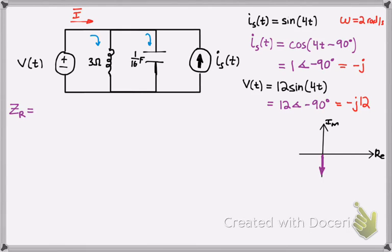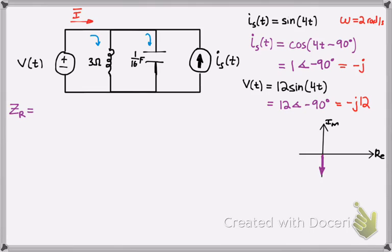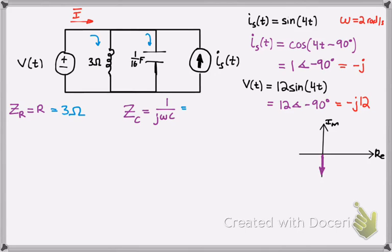The impedance of a resistor is just the resistance, which is 3 ohms. The impedance of the capacitor is 1 over j·omega·C. With C equal to 1/16 farads and omega equal to 2, that gives 1 over (2 × 1/16) which simplifies to negative 4j.